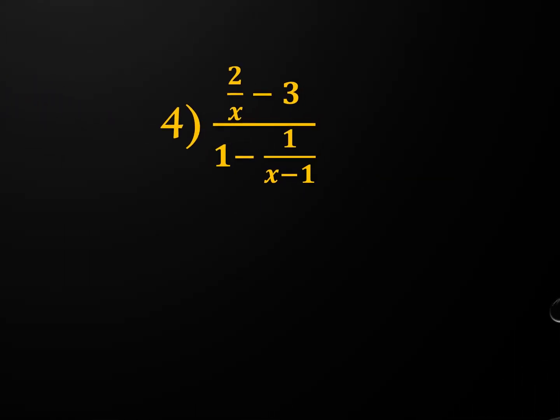When there are two terms in the top and two in the bottom, the two options get closer together. You can either: take just the numerator, find a common denominator, combine into one fraction, do the same for the denominator, then keep-change-flip at the end. Or you can look at all denominators everywhere in the fraction and find one overall LCD, then multiply everything by that. I'll walk you through both methods.